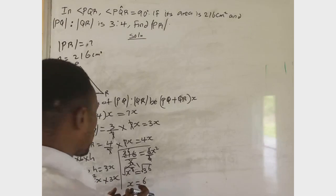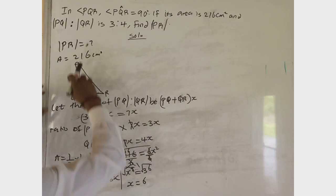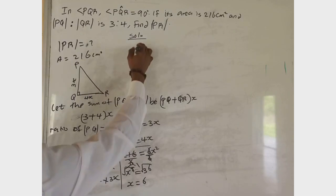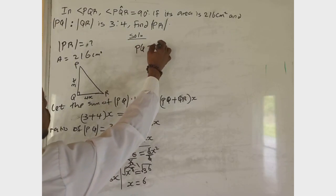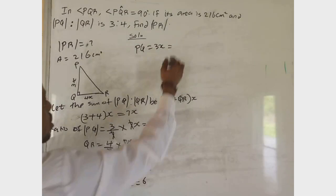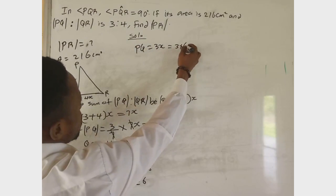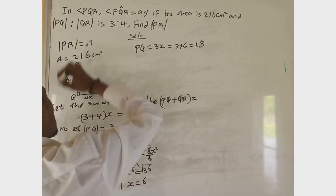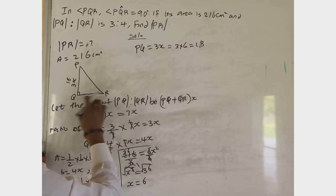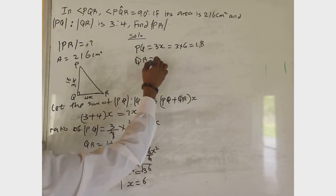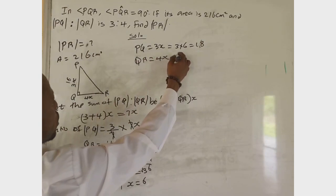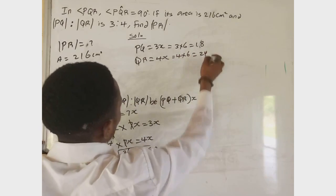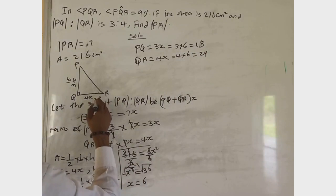Now, to get the actual size of the sides: side PQ equals 3S, and our S is 6, giving us 3 times 6, which is 18. So this side PQ is 18. For the second side, QR equals 4S. Four times 6 gives us 24. So side QR is 24.